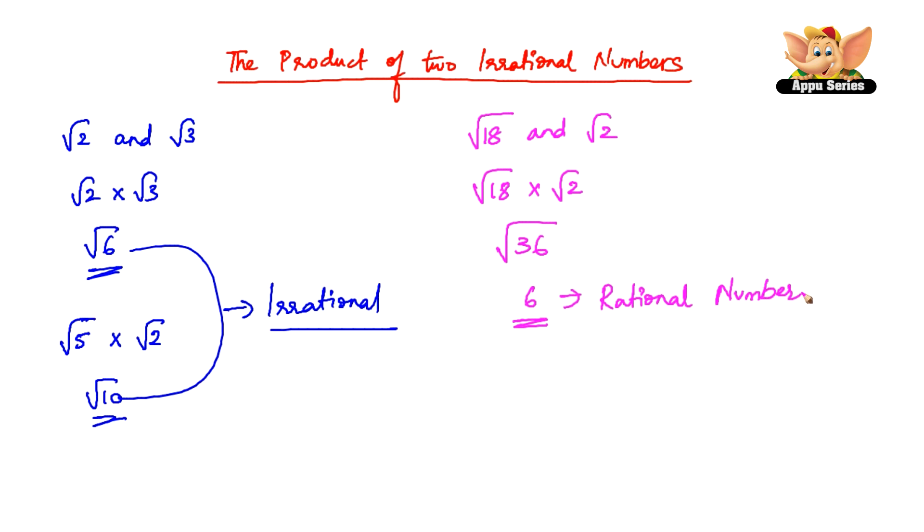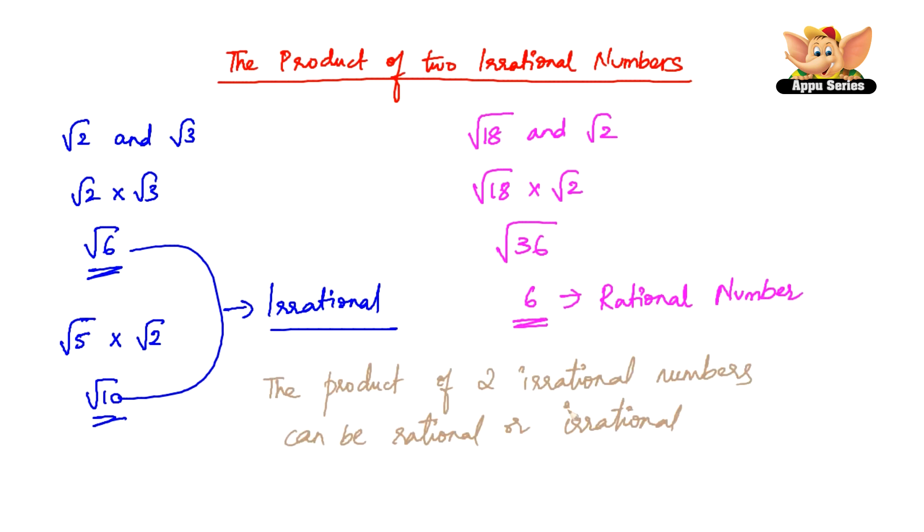So what we can conclude from this is: the product of two irrational numbers can be rational or irrational.